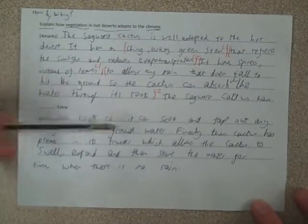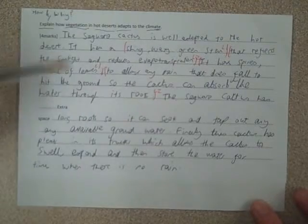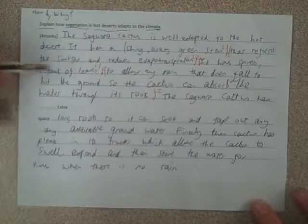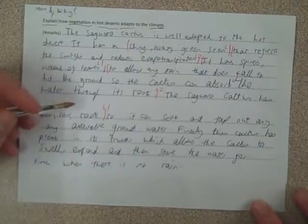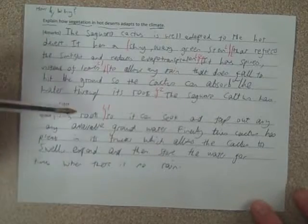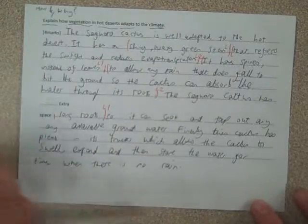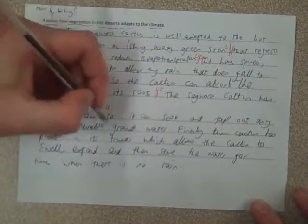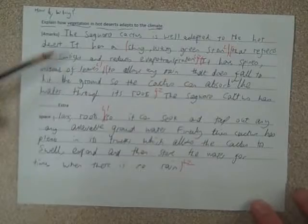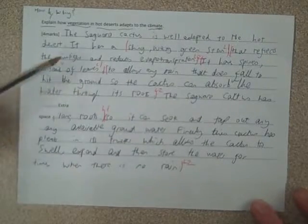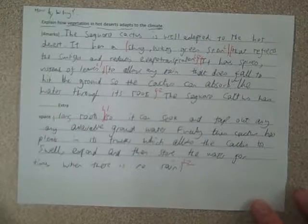Already at this stage, this person has pretty much gained the four marks. You might not actually have to write this much, but just to ensure we've got the mark, there's one more part. The saguaro cactus has long roots — level one — so it can seek and tap out any available groundwater. And finally, this cactus has pleats in its trunk, which allow the cactus to swell and expand and store water for times when there's no rain — that clear link to the desert climate, level two. I've made three statements there, which would normally be enough for about five or six marks. I'd always put that third one in if you've got the space or time just to ensure you reach those marks.